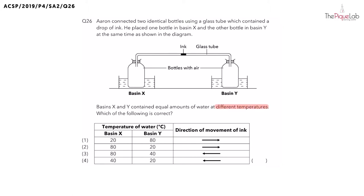They want us to find out which of the following is correct. Now, let's say that the ink droplet is going to move towards the right. What do you think causes this to happen? It must have been the air inside of the bottle for Basin X. Now, what must happen to the air in order for the air to enter the glass tube? The air must be able to expand. And in order for the air to expand, this means the air is going to gain heat. But what do you think the air is gaining heat from? The air is gaining heat from the water in Basin X. But in order for air to gain heat from the water, the water must be warmer.